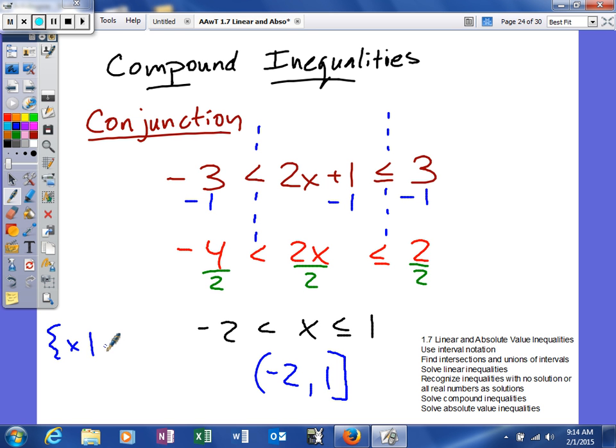Set builder would look like this: the set of x such that negative two is less than x, which is less than or equal to one. There you go. So that's your compound inequality conjunction.